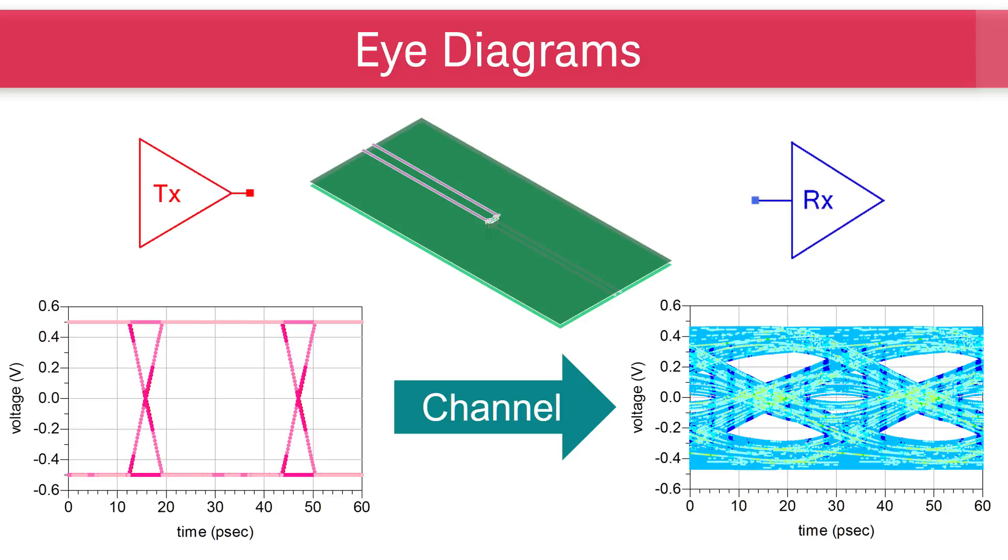On the left, the eye at the transmitter side is open. The digital one and zero levels can be clearly distinguished. However, after the signal goes through the channel and reaches the receiver, the eye is closed. It will be hard for the receiver to tell a digital one from a zero, and we know we have a signal integrity problem.